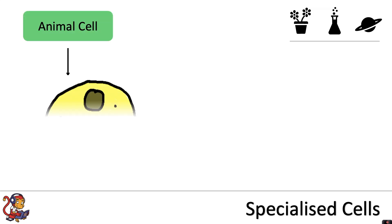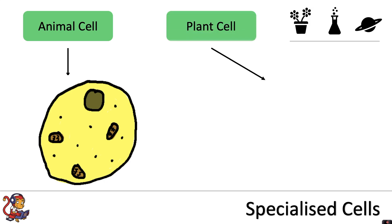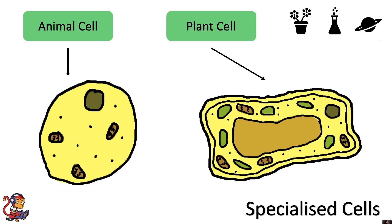In a previous video we introduced animal and plant cells, looking at the typical model of an animal cell and a typical model of a plant cell. However, in reality animals and plants are made up of all sorts of different types of cells, and they will all have a very specific shape to do the particular job or function that they are designed to do. In this video we're going to look at a number of different specialised animal and plant cells.